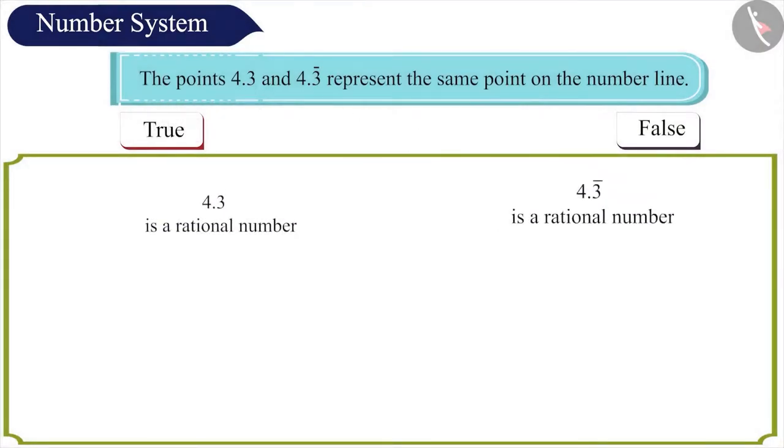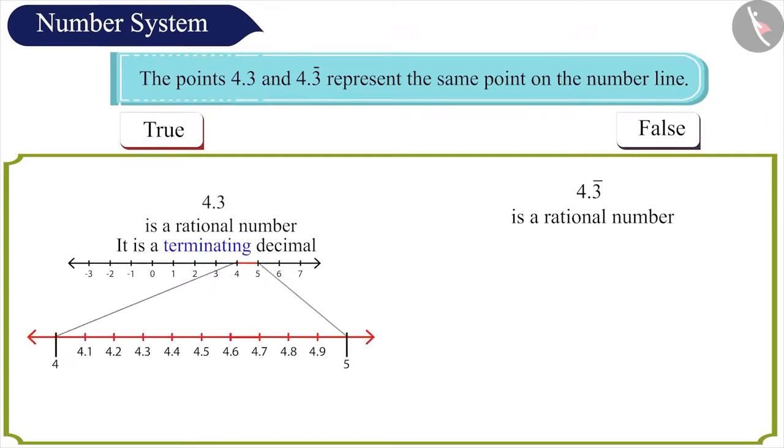Friends, both these numbers are rational numbers. But 4.3 is a terminating decimal. We can accurately represent this number on the number line this way.